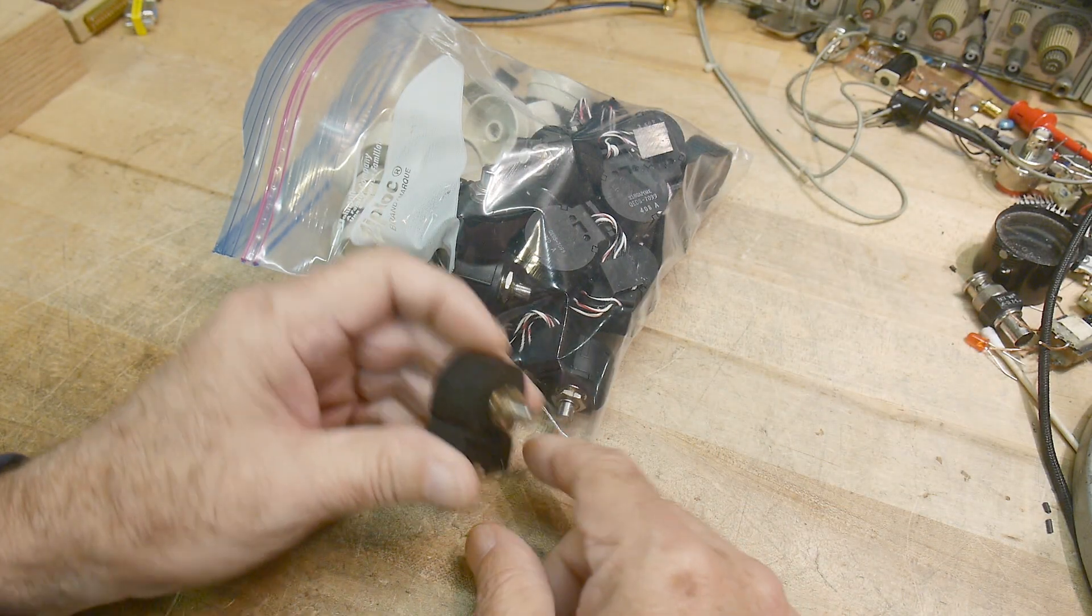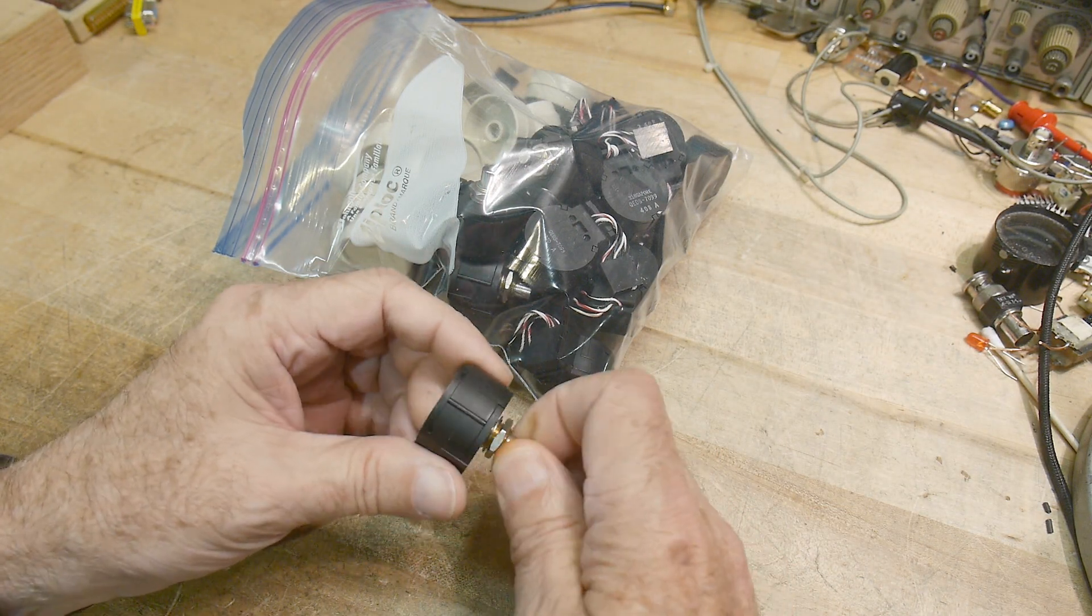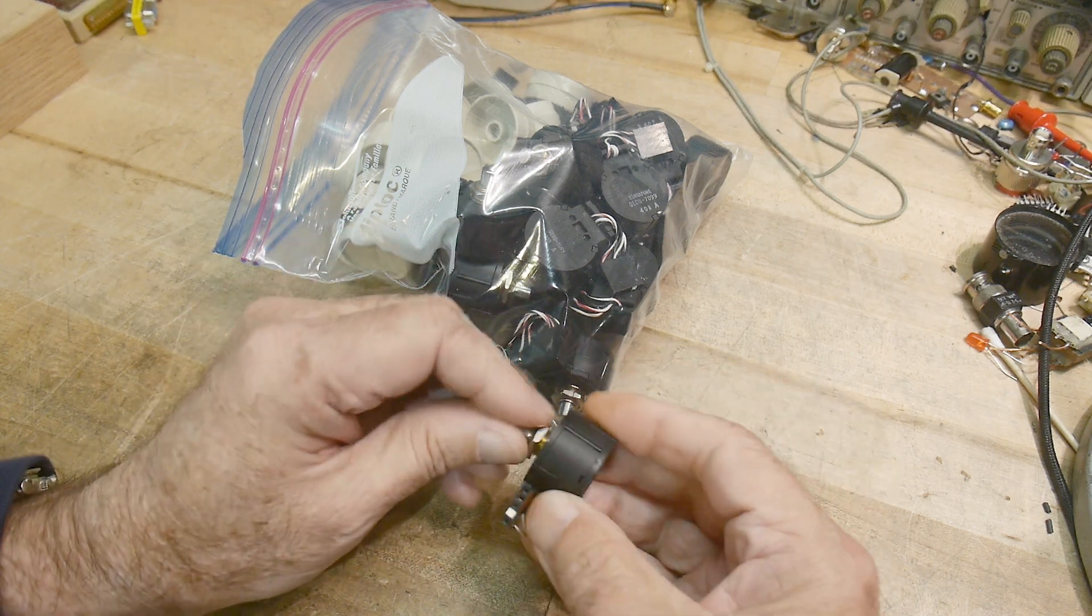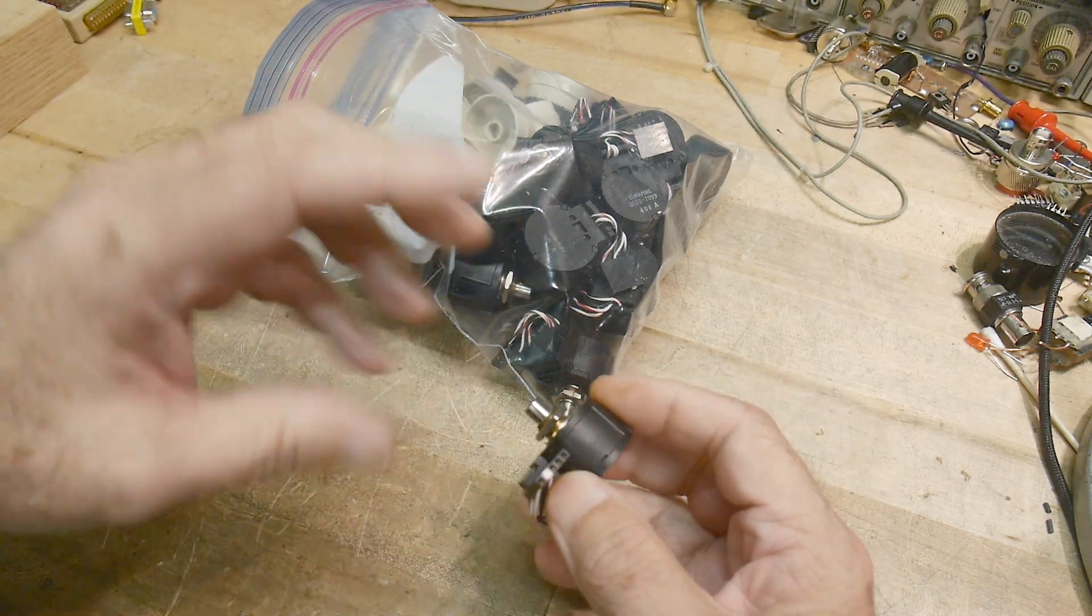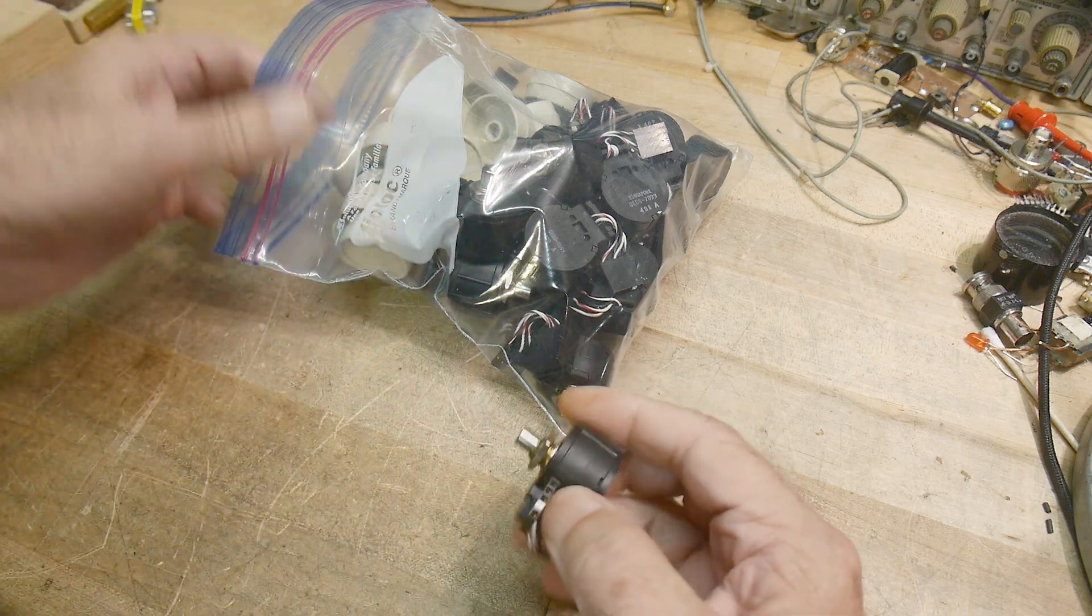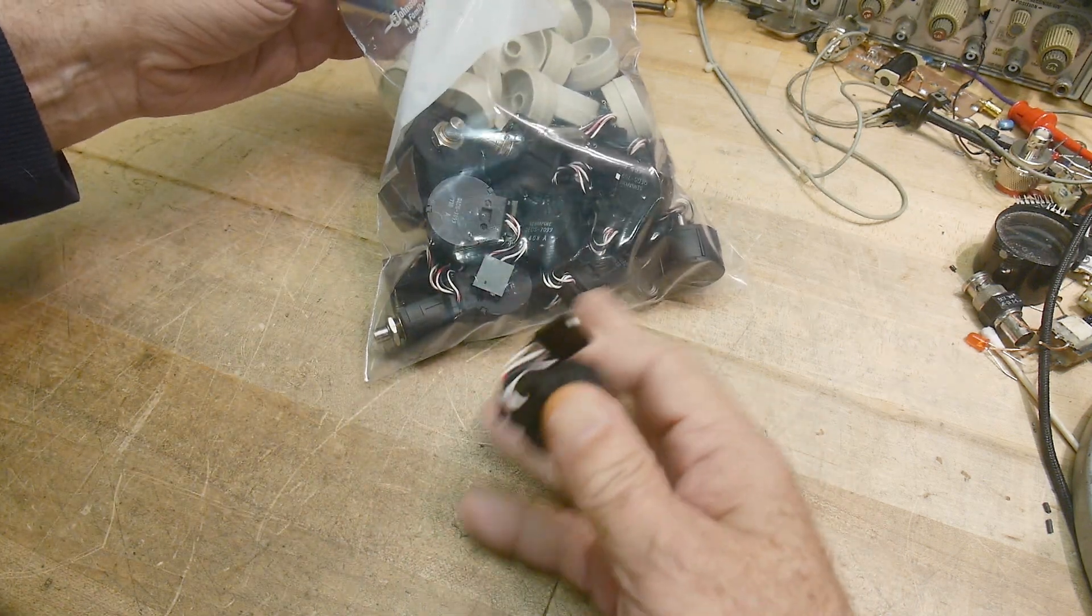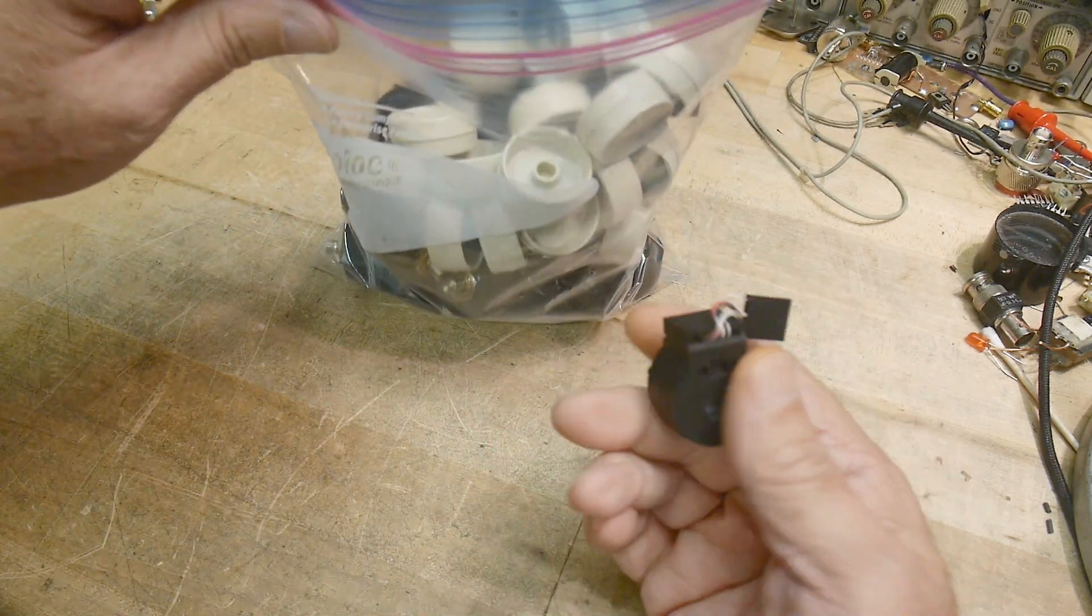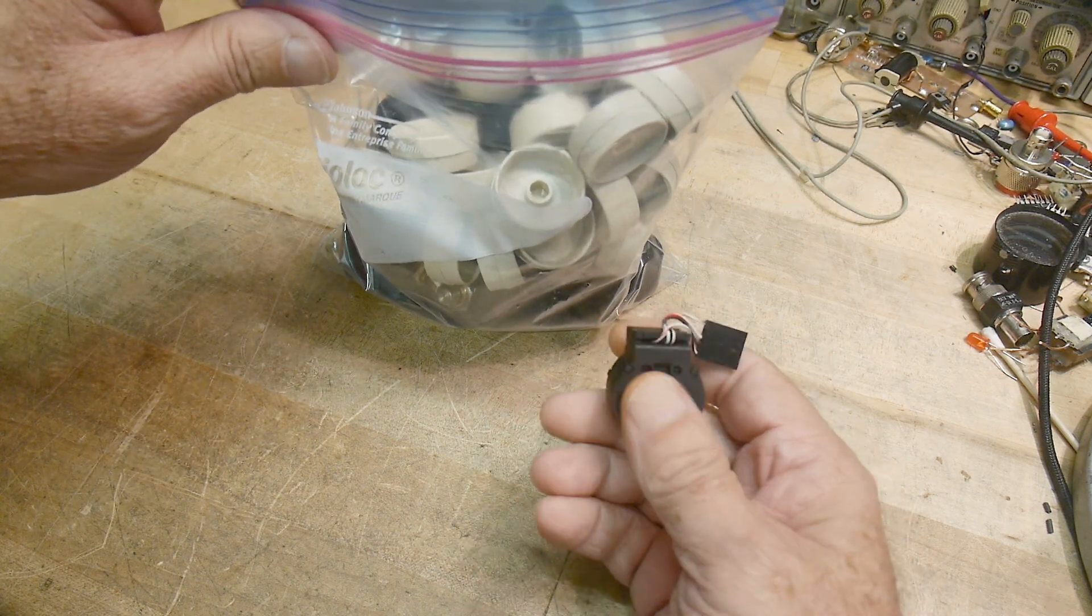All right, in a previous video I talked about rotary encoders, shaft encoders. I got these out of a control box that had a bunch of knobs in it. There's a whole bunch of them, 16 of these I guess, and these were HP shaft encoders.